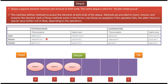Each of these methods comes in two forms. The first form: if the operation fails, it will throw an exception. The second form: if the operation fails, it will return a special value. The special value can be NULL or FALSE depending on the operation.